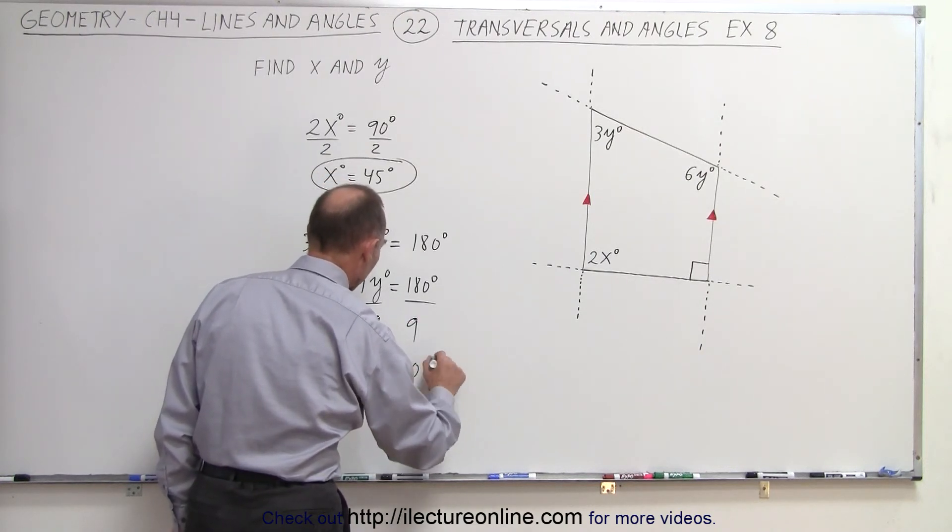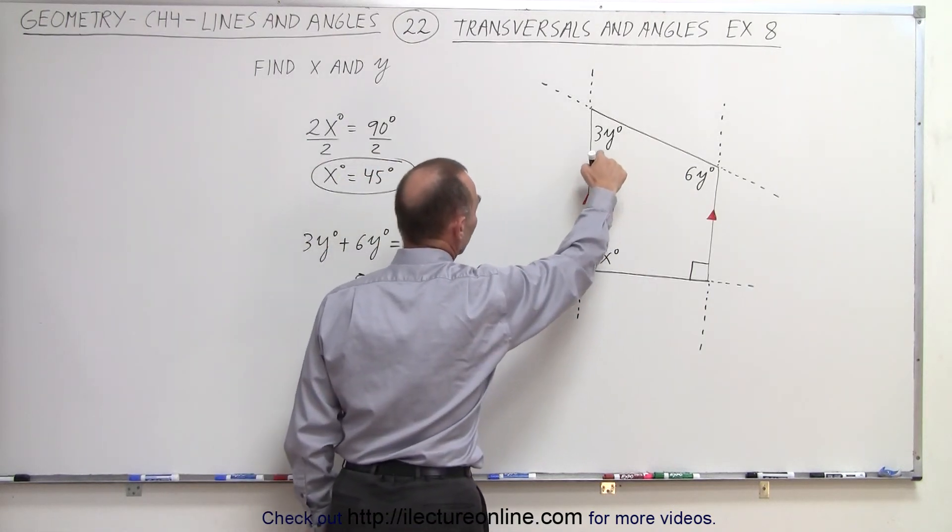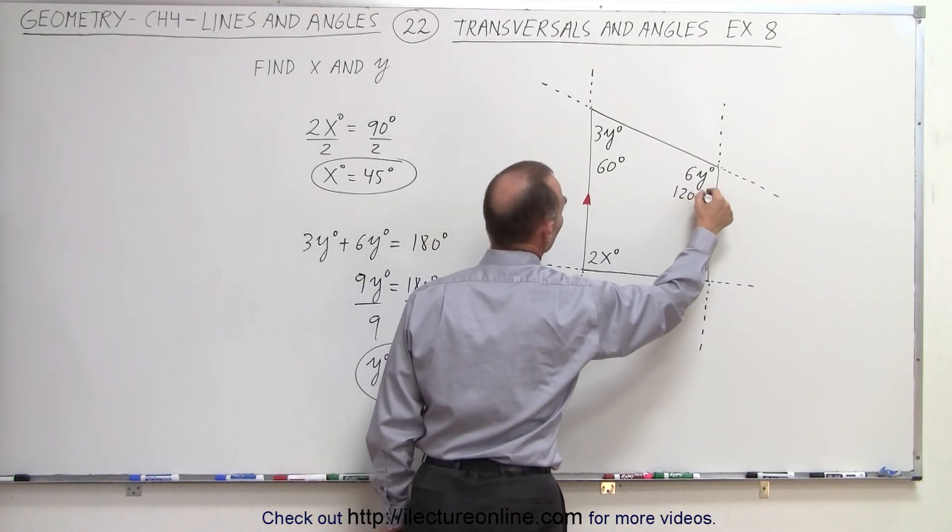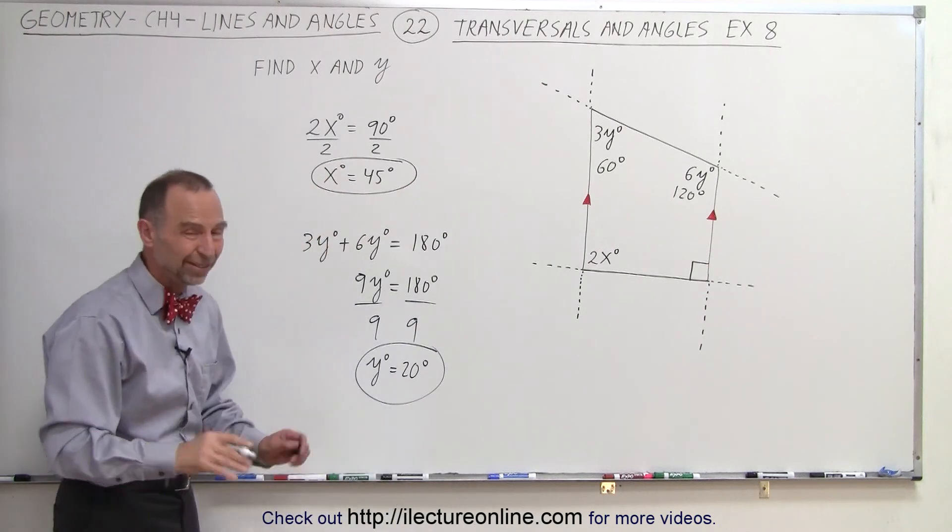So you can see then that this angle here, 20 times 3 is 60 degrees, and this is 6 times 20 or 120 degrees, and sure enough, when you add them up, they do add up to 180 degrees.